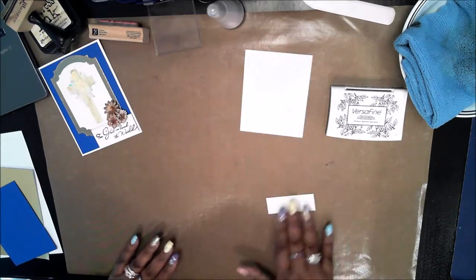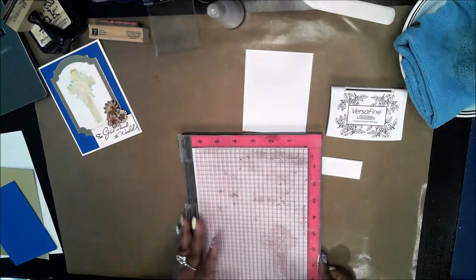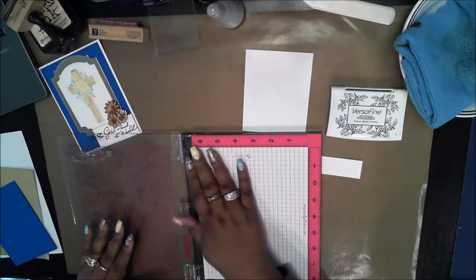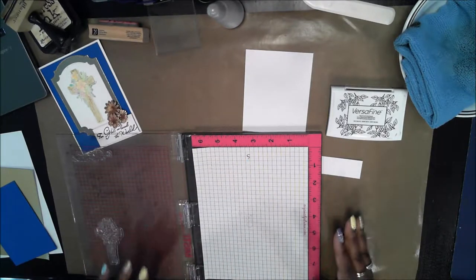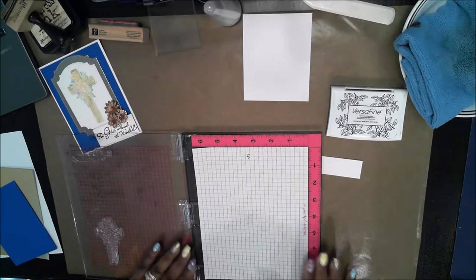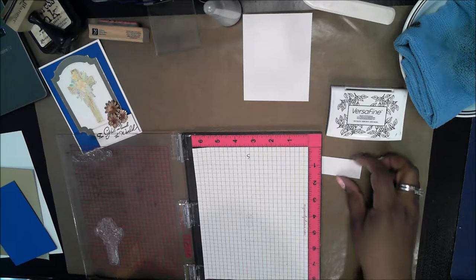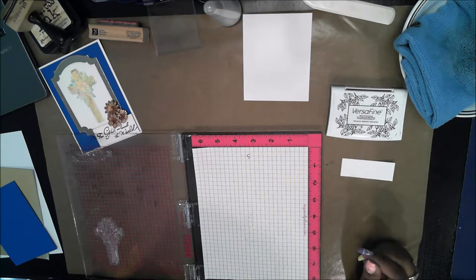I've cleared away some of those things so the first thing I'm doing is bringing in my Misti tool. I'm using my Misti tool so that if I don't get a good impression the first time I can just stamp it right again and stamp in the same place. That's a very good helper thing for when you're working on watercolor paper.